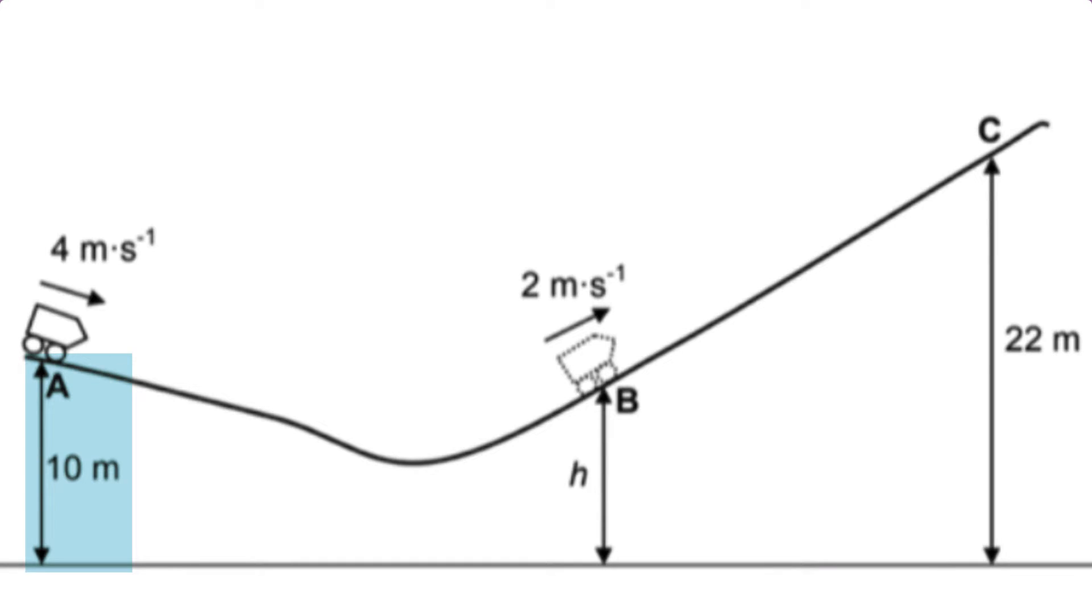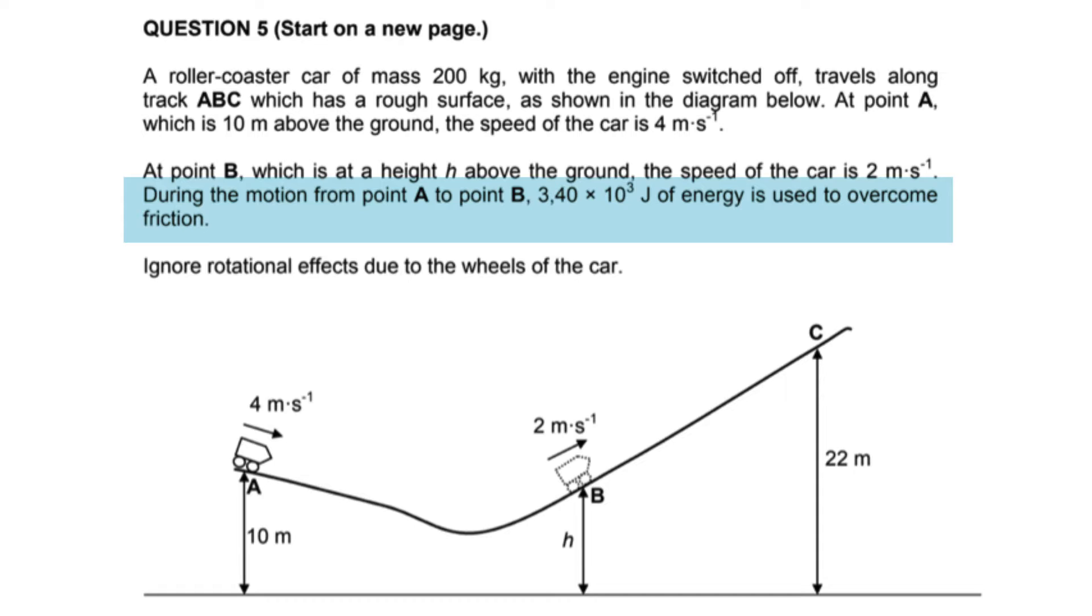We're told the height of A and C above the reference level and one of the things that we need to calculate is the height H of B. We also know how much energy was dissipated because of friction between A and B.